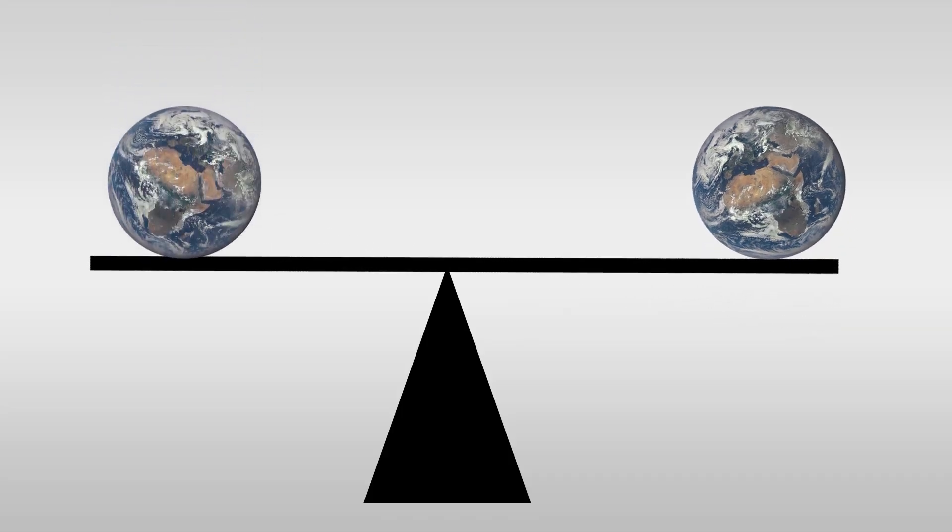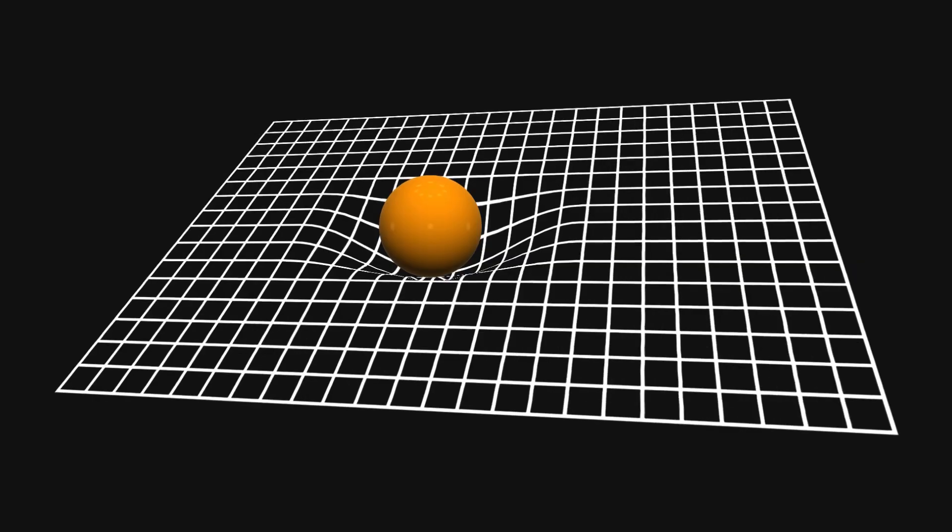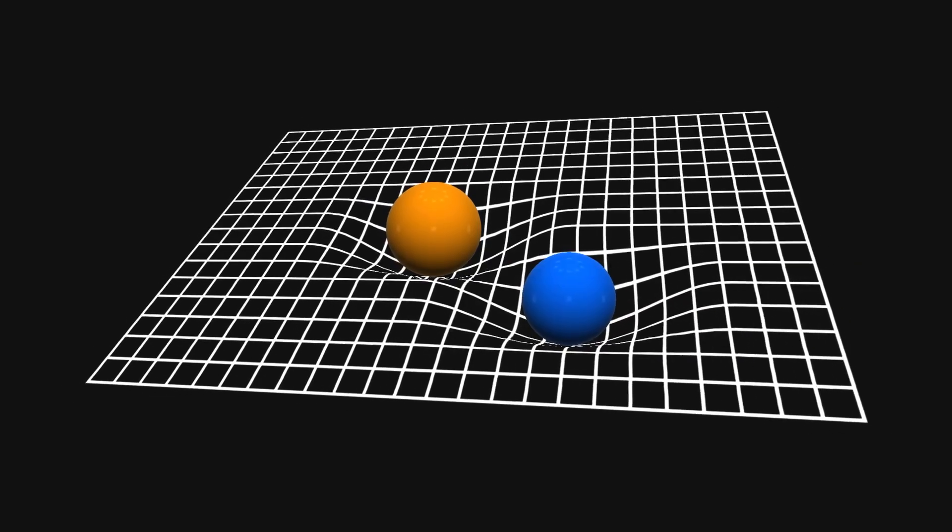The panel suggests fixing curved space-time by adding equal and opposite gravity. But tossing another planet into the mix doesn't cancel out space-time bending. It deepens the dent, like adding a second bowling ball to a trampoline.